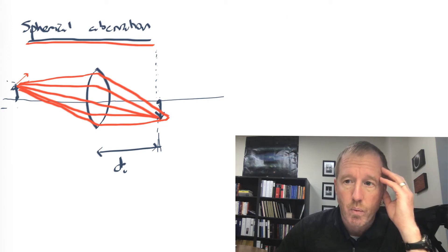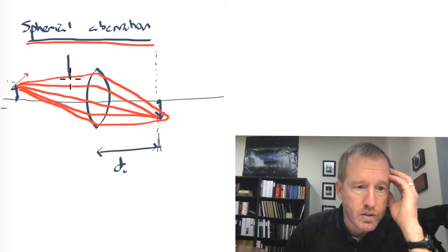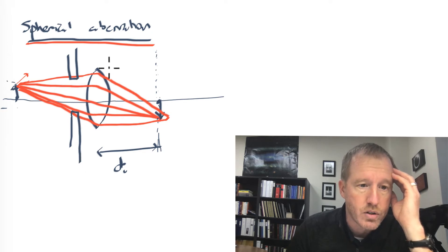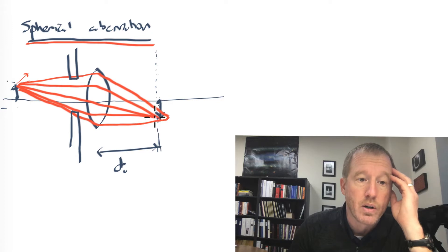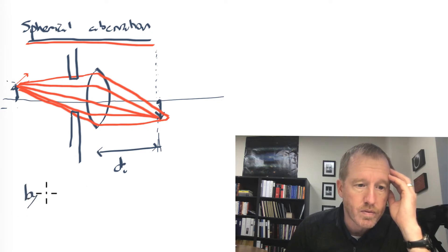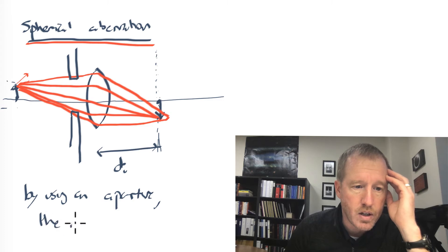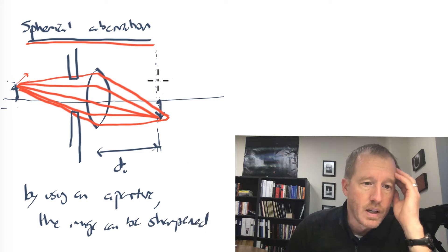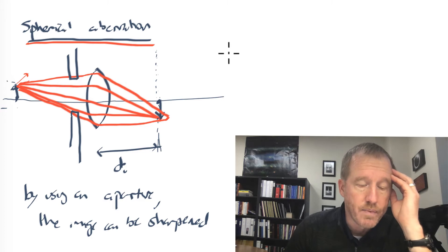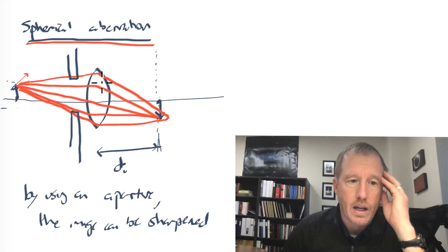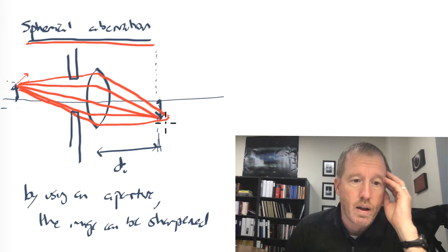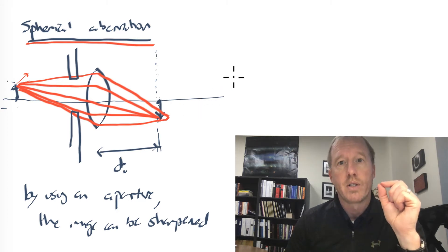How can you prevent this? One way is by using an aperture or an iris that will block any rays that would have gone through the edges of the lens. If you block those, and the only ones that get through are the ones that come through the middle, they focus in the correct plane and you'll get a sharper image. By using an aperture, the image can be sharpened and made clearer. The smaller the aperture, the sharper the image you get. But there's a trade-off: as you make the aperture smaller, less light gets through the lens, and so the image also gets dimmer.